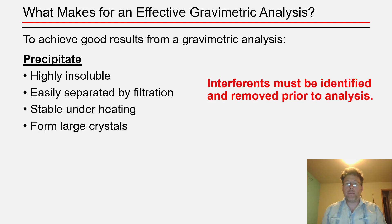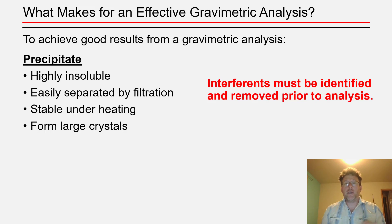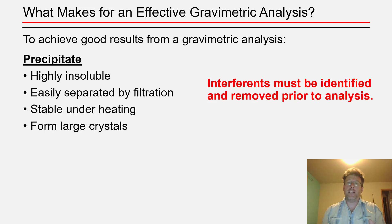Not all precipitation reactions are suitable for gravimetric analysis. The watchwords for designing an effective gravimetric analysis are that to get a quantitative yield of a pure precipitate, you must choose an analyte and precipitant pair that leads to a precipitate which is highly insoluble and easy to collect by filtration, so you can recover better than 99.99% of the precipitate made in your chemical reaction.